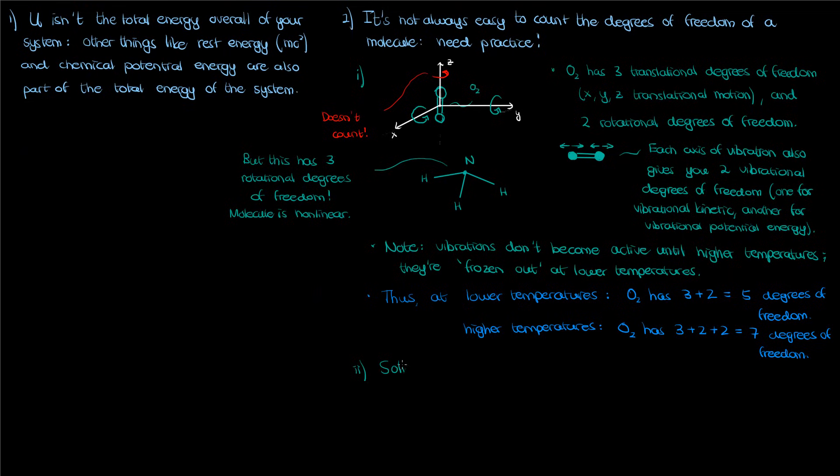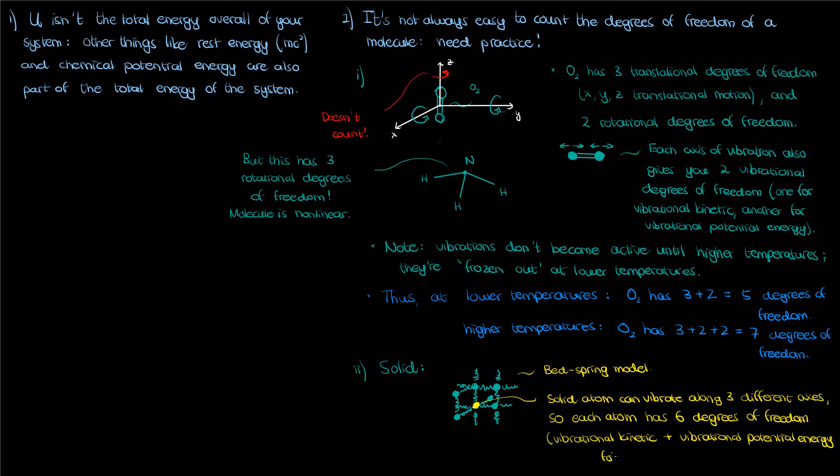If you've now got a solid, then you can think of a solid as a bunch of atoms connected to other atoms by springs in all directions, like in this bed spring model. Since each solid atom can vibrate in three different directions, each atom then has six degrees of freedom because you have a vibrational kinetic and vibrational potential component for each direction or each axis of vibration.